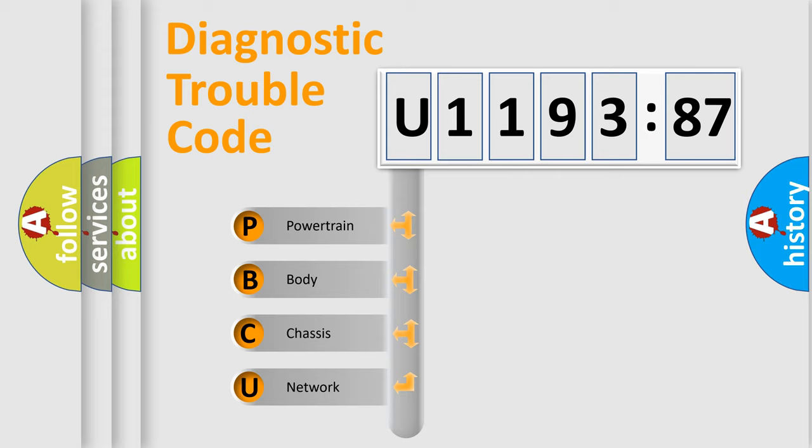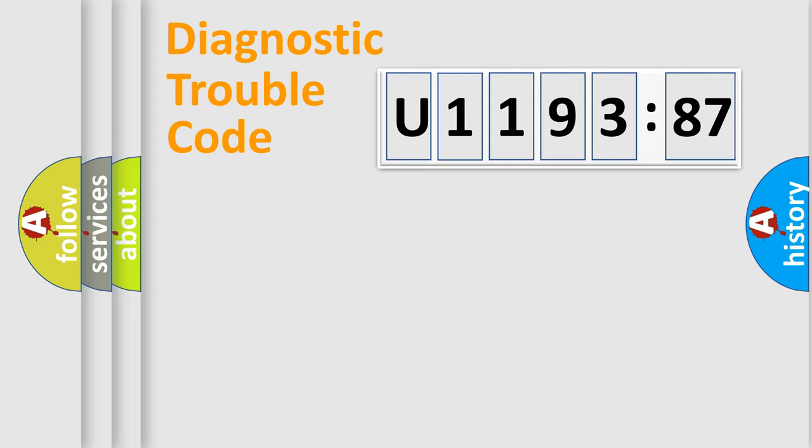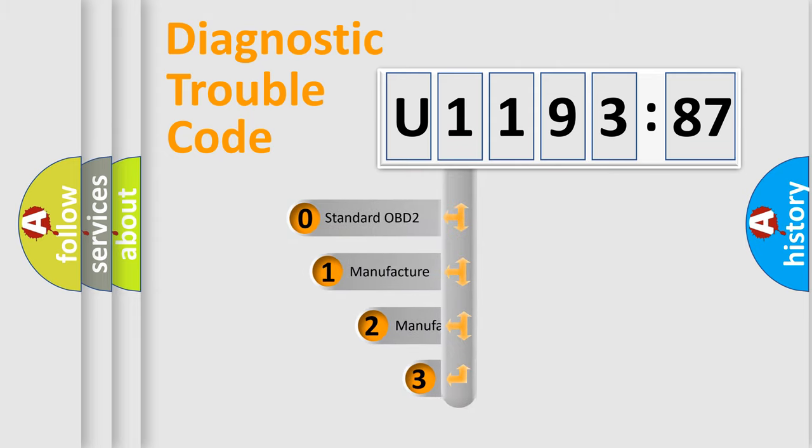We divide the electric system of automobile into four basic units: Powertrain, Body, Chassis, and Network. This distribution is defined in the first character code.